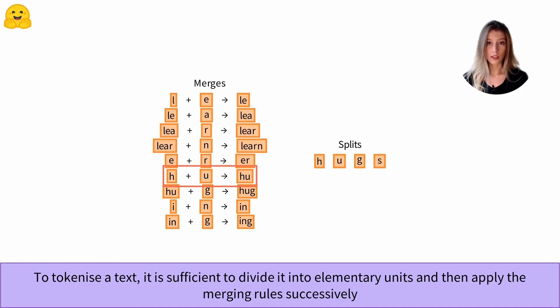Here we can merge the letters h and u, and here we can merge two tokens to get the new token hug. When we get to the end of our merge rules, the tokenization is finished.